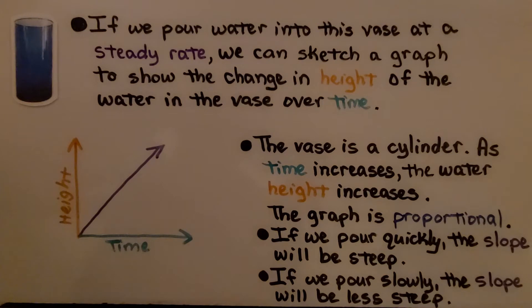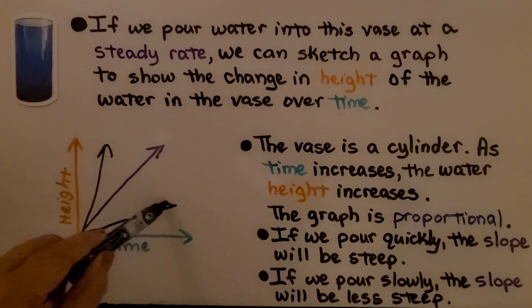Since the vase is a cylinder, as time increases, the water height increases, and the graph is proportional. If we pour quickly, the slope will be steeper. If we pour slowly, the slope will be less steep.